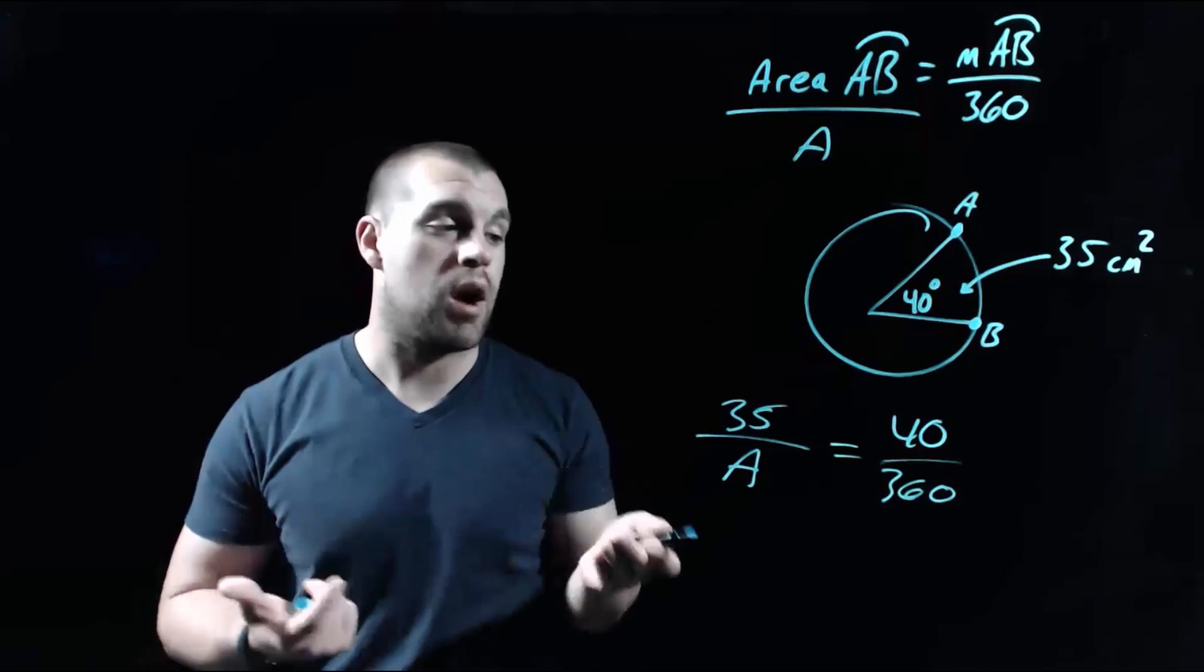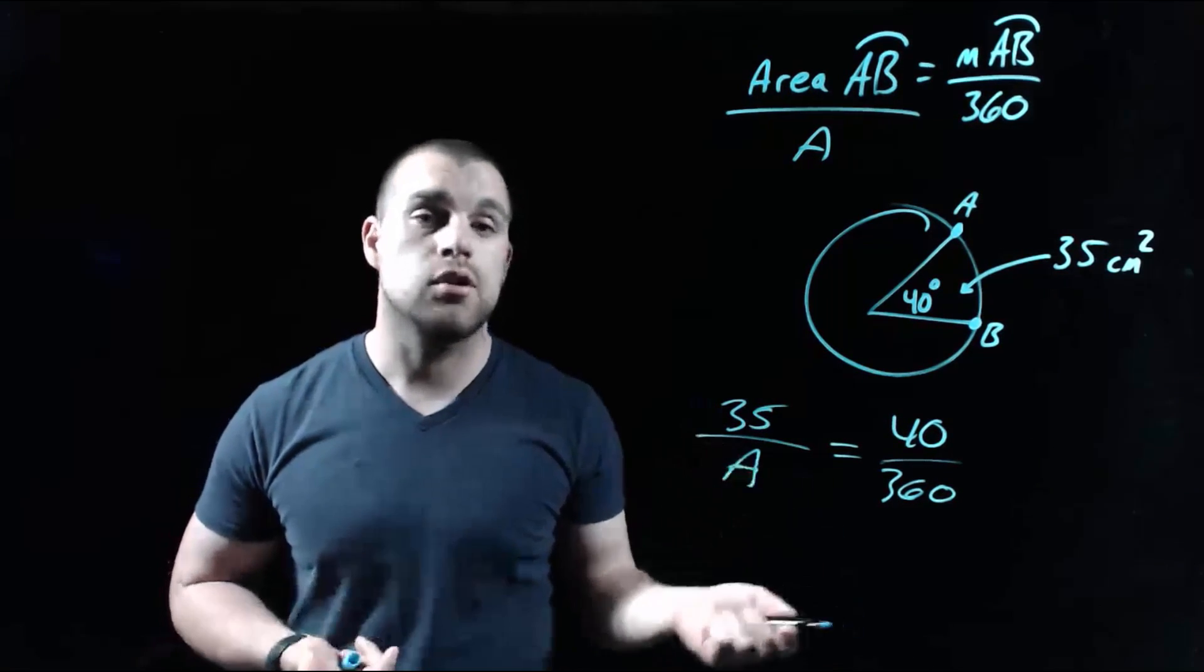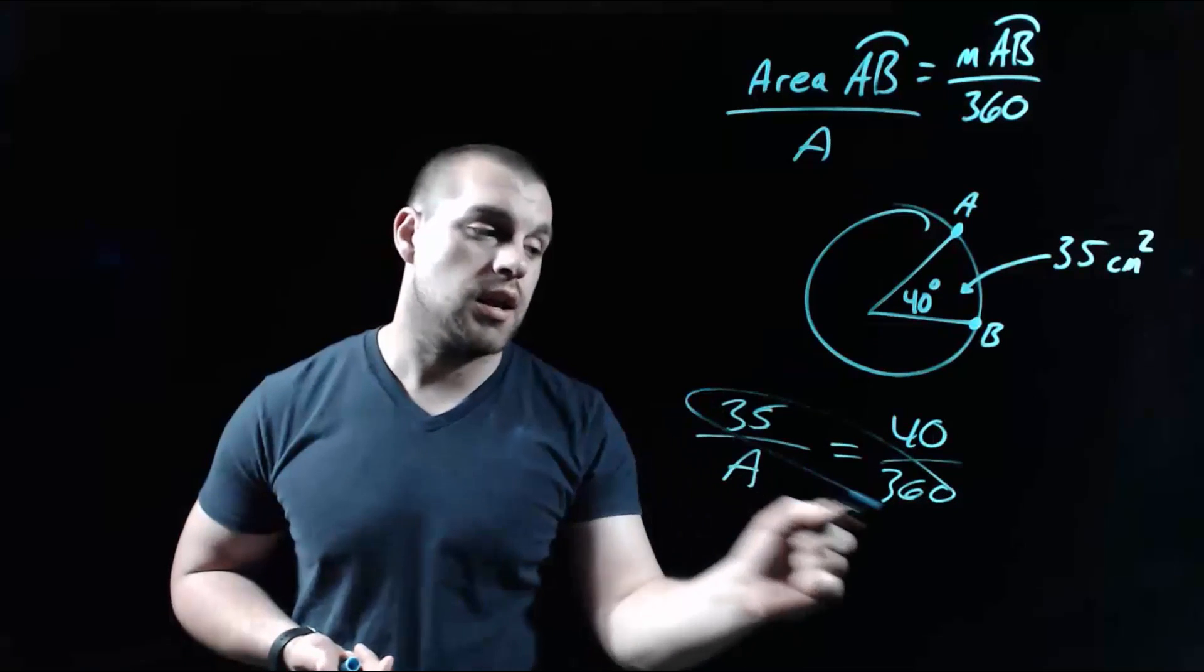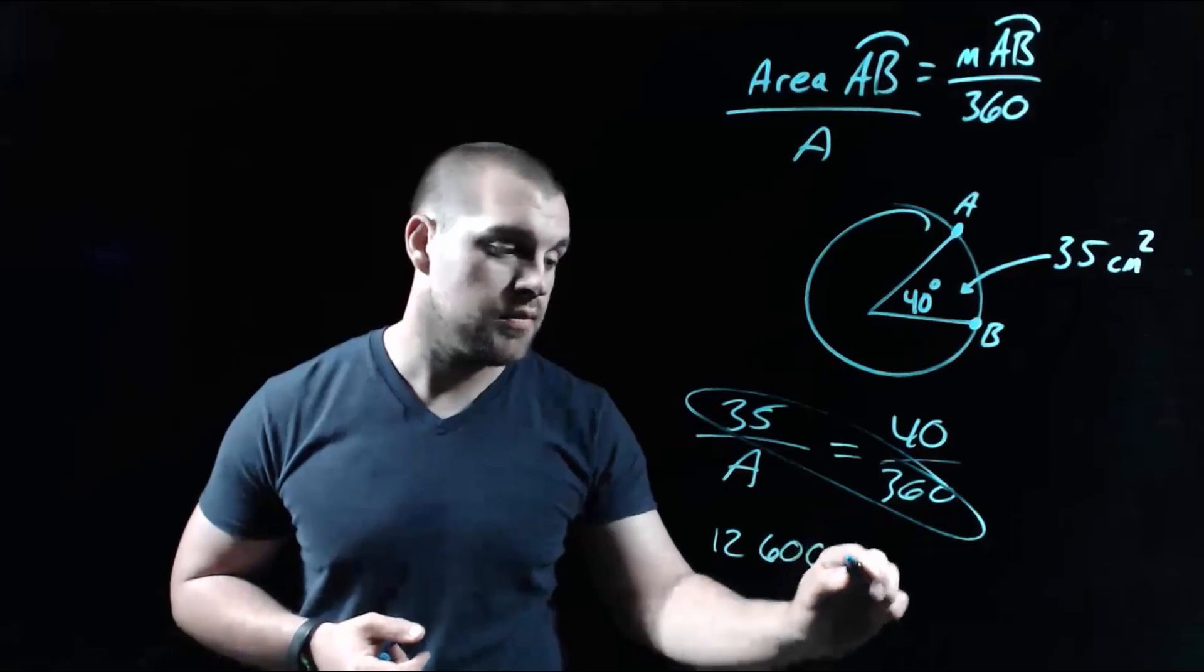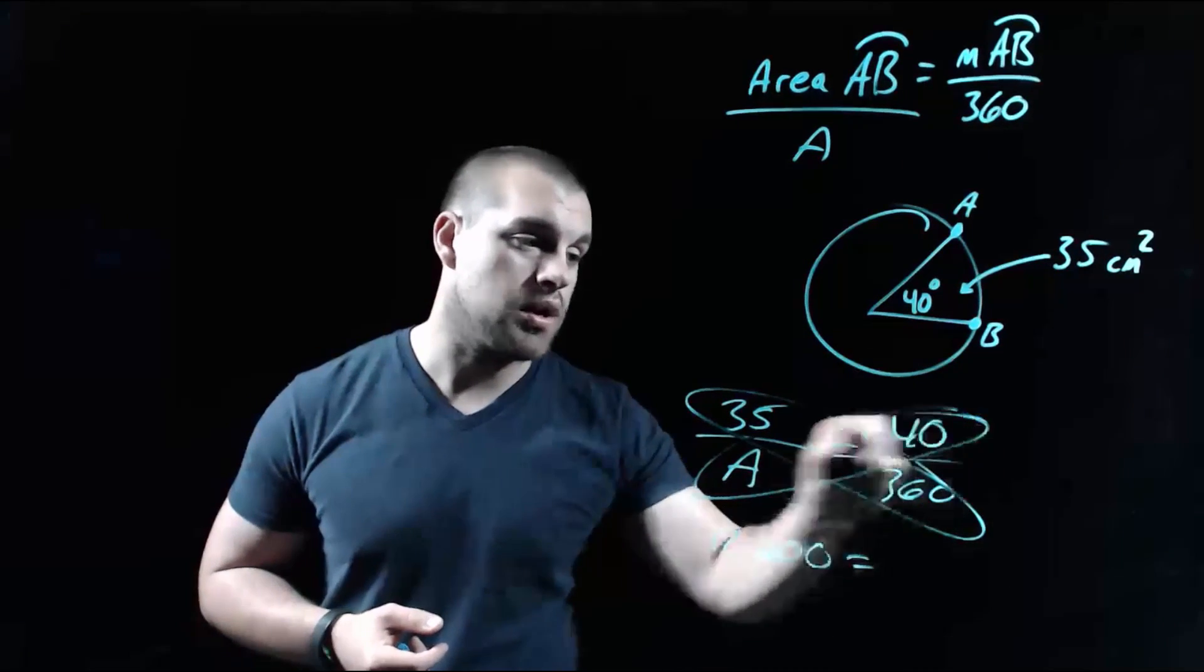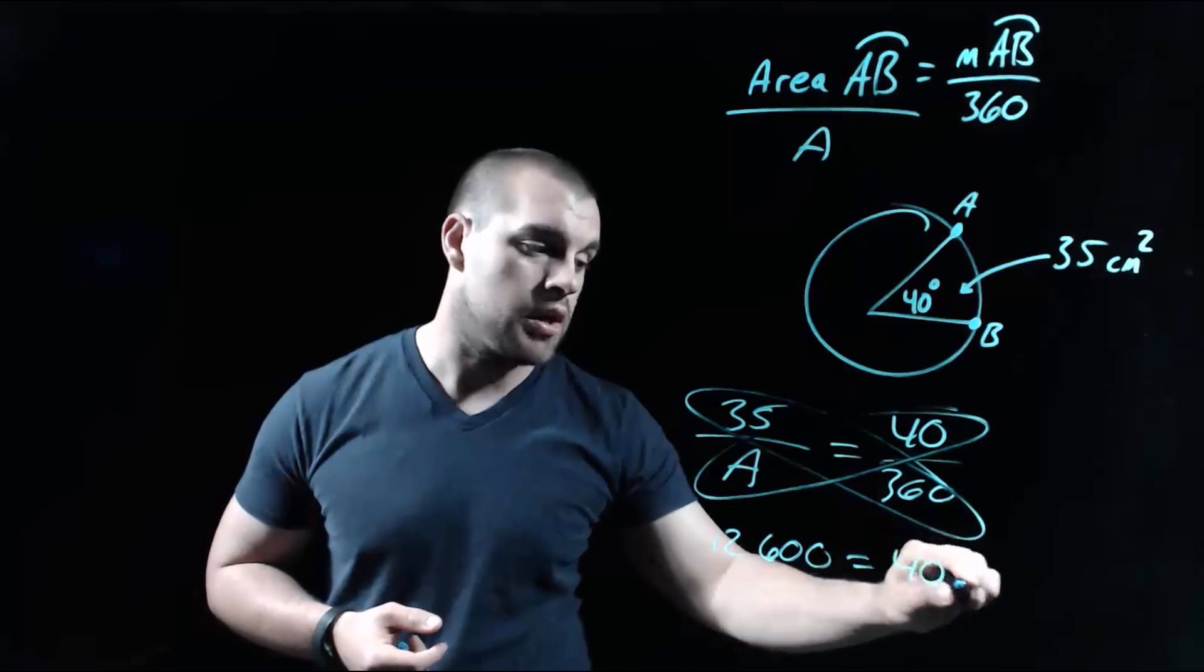Now since we've got a proportion, fractions on each side of our equal sign, I'm going to do a little cross-multiplying. So taking 35 times 360, we get 12,600, equals, if we take 40 times A, we get 40A.